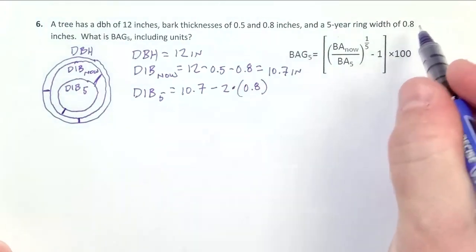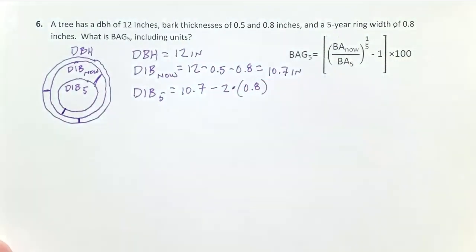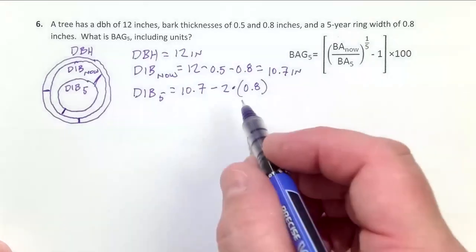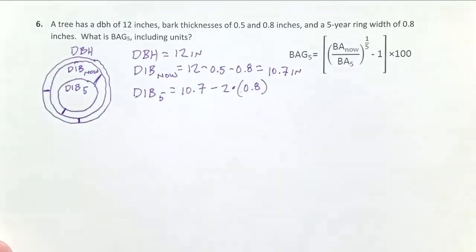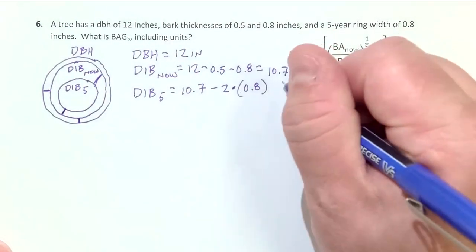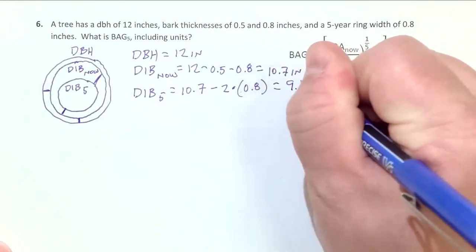You can see our ring width was 0.8. In this problem, that happened to be one of our bark thicknesses too. Just a coincidence, they're not always the same. So 2 times 0.8 is 1.6. 10.7 minus 1.6 equals 9.1 inches.